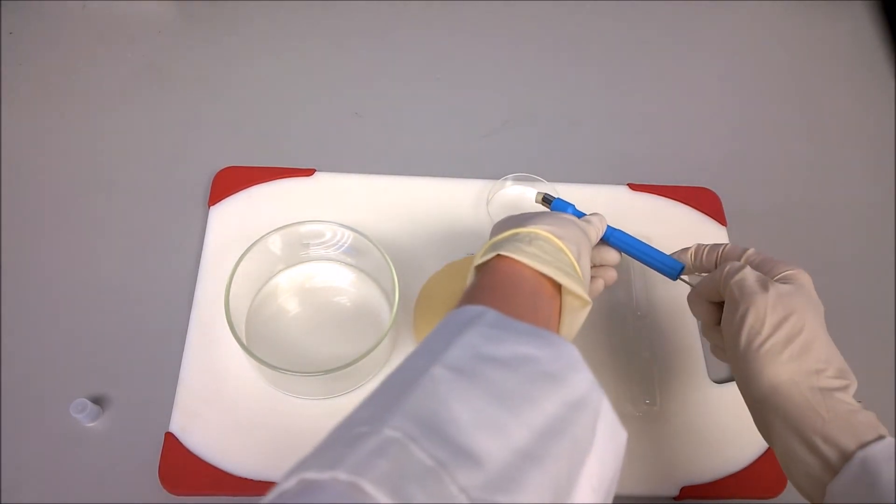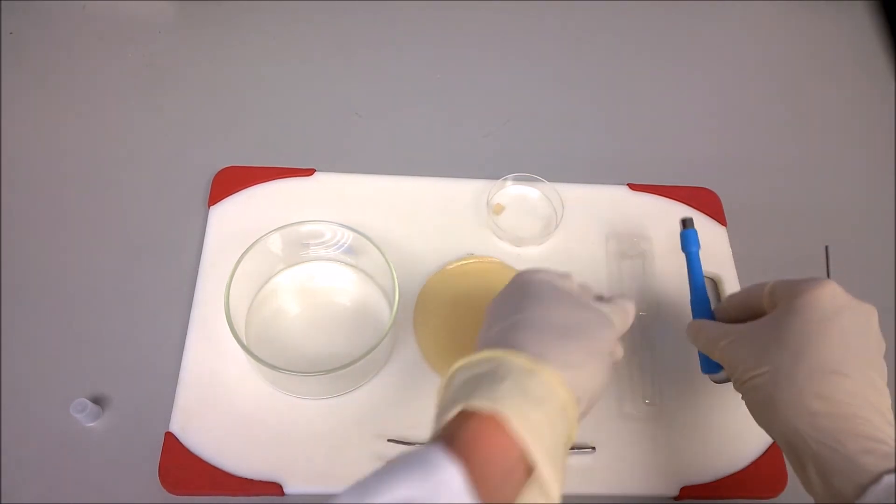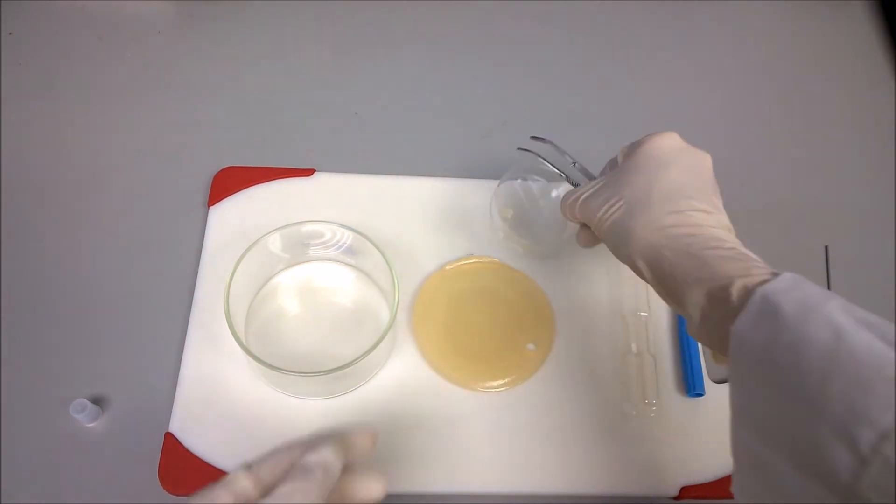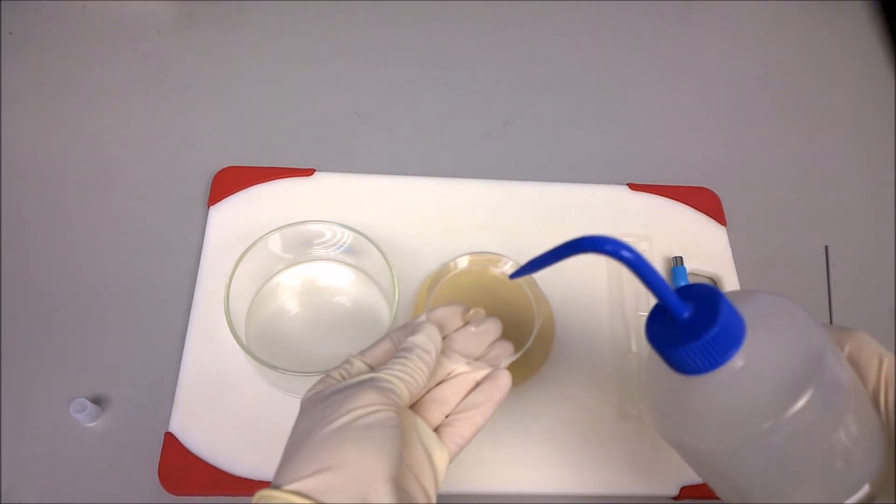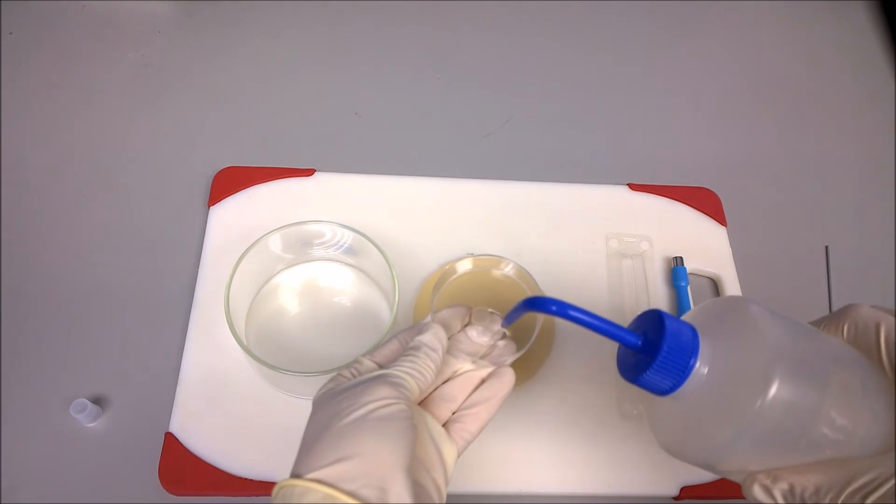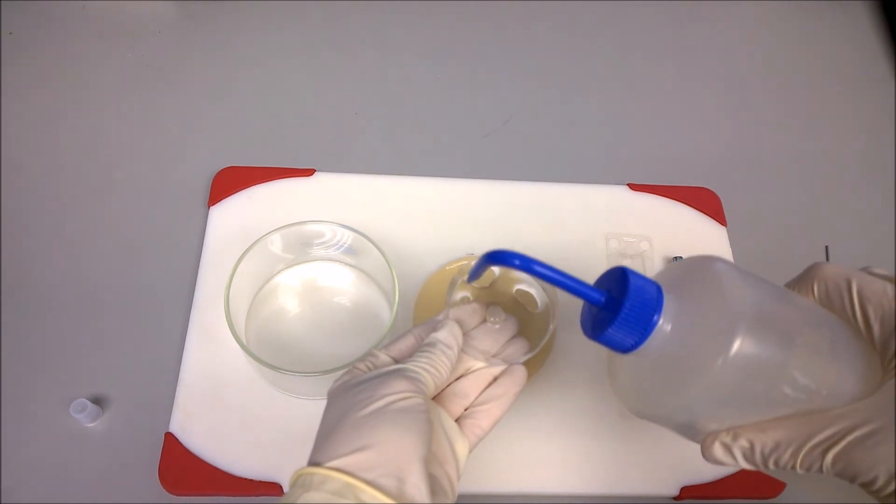Ensure that the plastic disc is removed before performing mechanical tests. Store hydrogel discs in deionized water. Repeat those steps twice to obtain 3 hydrogel disc shaped samples.